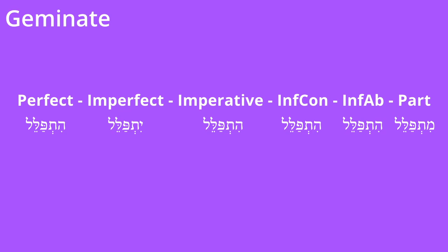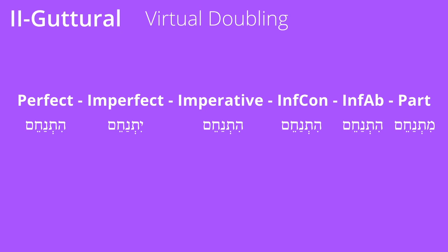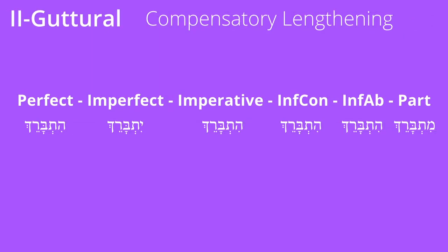What about weak verbs? They're straightforward — no changes in the perfect, imperfect, imperative, infinitives, or participles. When it comes to Geminates, there are really no diagnostic changes, and for Third-Hey, just note you're going to see a dagesh in the first root consonant, but that's not part of the diagnostics for Hithpael. In Second Gutturals, we're still going to see our prefix, but we won't see a dagesh in the second root consonant. Instead, we'll see a lengthening Patah under our first root consonant. It's still unmistakably Hithpael because you see the prefix. If it's not virtual doubling, then you're going to see compensatory lengthening — a Qamets under the first root consonant — but you will still see your prefix.